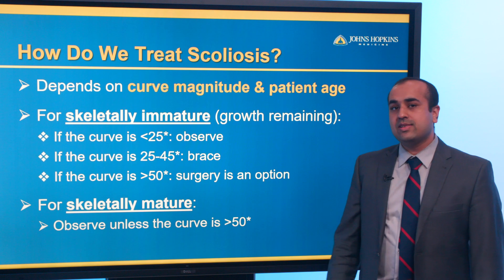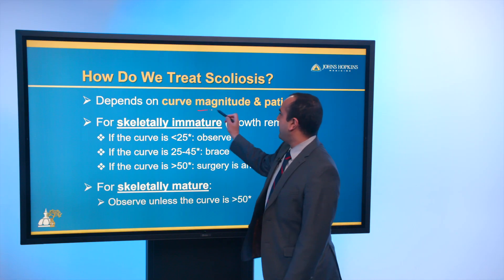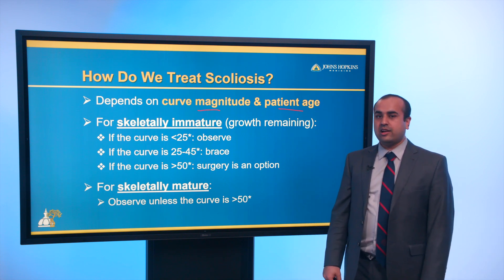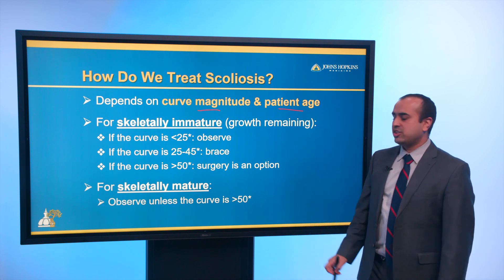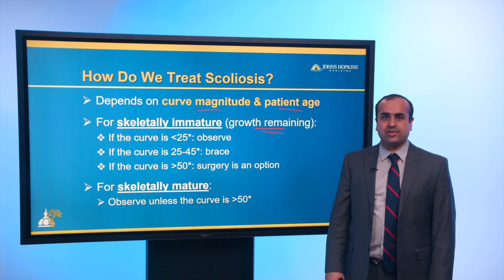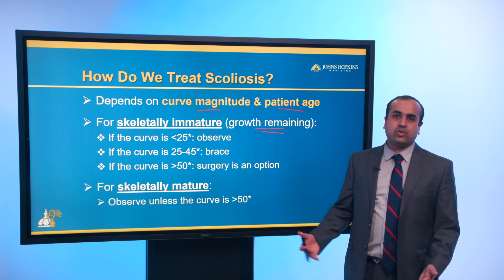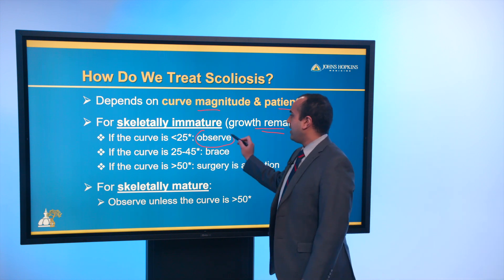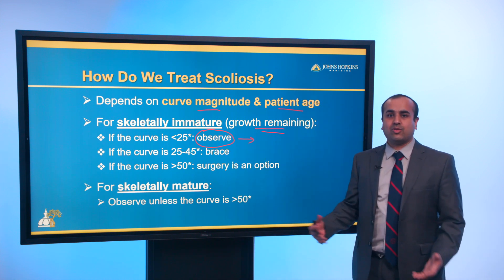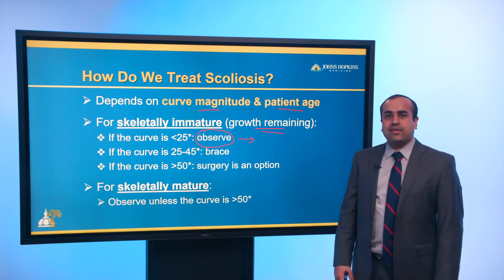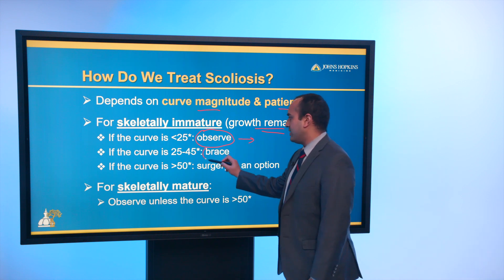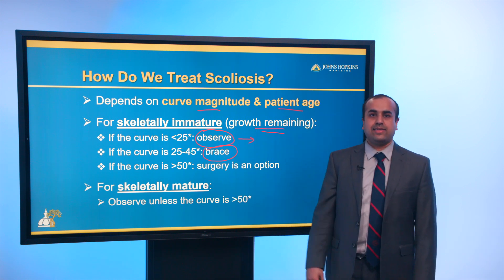How do we treat scoliosis? It really depends on curve magnitude and patient's age — both very important considerations. For the skeletally immature patient who has growth remaining, if the curve is small — less than 25 degrees — you observe and have the patient return to see if the curve has progressed. If the curve is in the middle range, 25 to 45 degrees, bracing is the treatment of choice, and braces can be extremely effective.